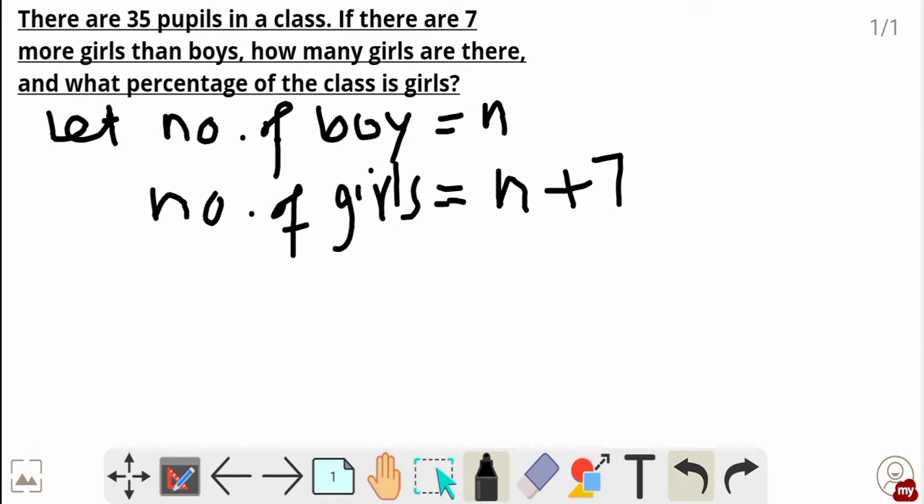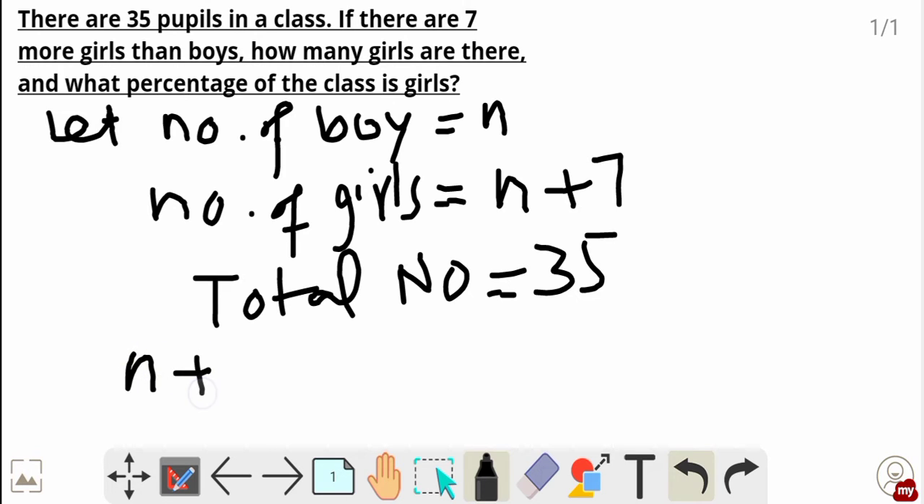The total number of pupils in the class is equal to 35. So now we have to calculate the value of n. n plus n plus 7 is equal to 35.